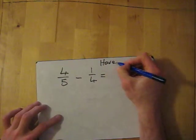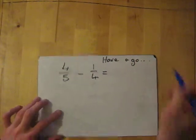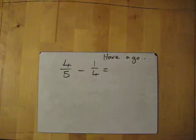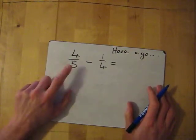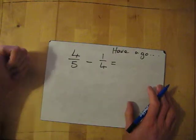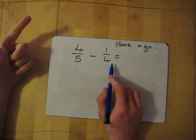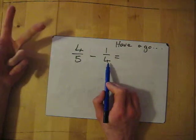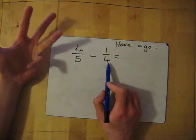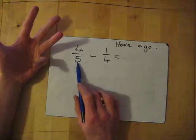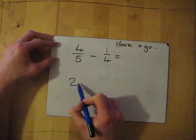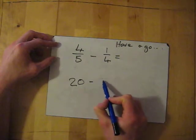Let's do one more — this one is for you to have a go at, so pause if you want. The answer is coming in three, two, one. Common denominator between five and four: five doesn't work for four, ten doesn't work for four, fifteen doesn't work for four, but twenty works for both five and four. So we're going to change both into twentieths.